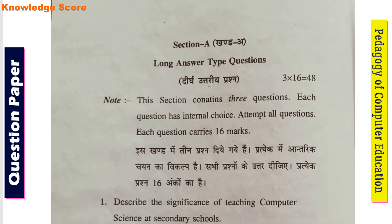First, we will discuss Section A. This section contains long answer type questions. There are three questions and total marks are 48. Each question carries 16 marks. The instruction says: this section contains 3 questions, each question has internal choice, attempt all questions, and each question carries 16 marks.